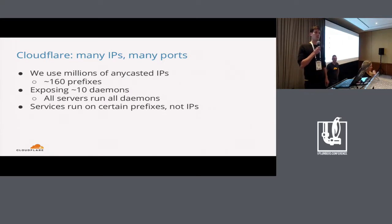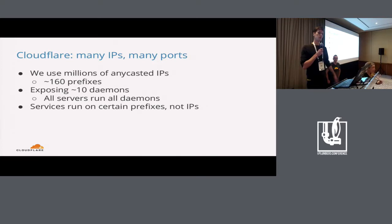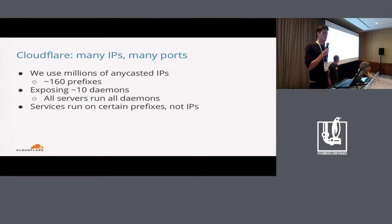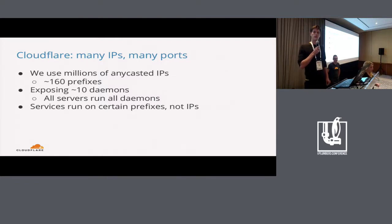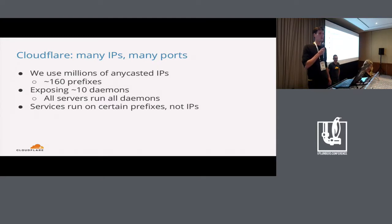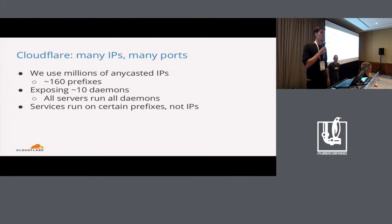For a little bit of context, Cloudflare you can think of as a gigantic reverse proxy. We terminate HTTP traffic, HTTPS traffic, TCP connections on our edge. We perform security optimization on them and then sell that as a service to our customers. To do this, we literally use millions of IPs — anycast IPs. Currently that's around 160 distinct prefixes across IPv4 and IPv6. We have about 10 daemons exposed to the public internet, and one interesting quirk of our setup is that all machines run all services. So in our mental model, we think of services running on prefixes and not on individual IPs.